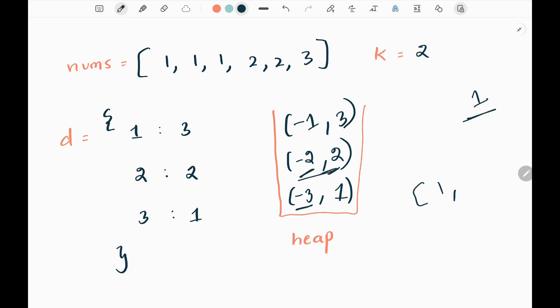Then I will get negative two and two. Then I will just pick the number. And we are done here. Since we need only two elements, we have picked the two most repeated elements.